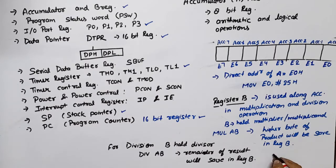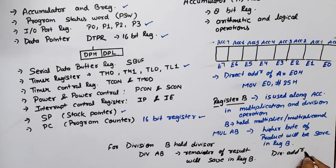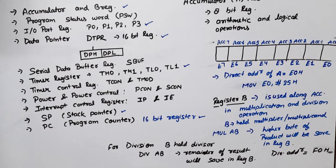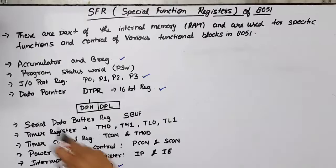The direct address of register B in RAM is F0h. Bit-by-bit addresses go from F0 to F7. This covers register B. For input/output port registers in the 8051, there are four ports that can work as input or output ports. Each port has 8 bits.